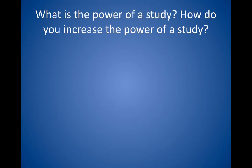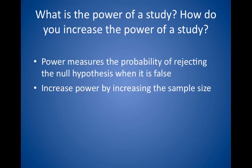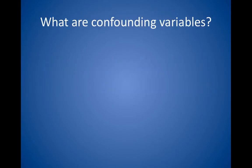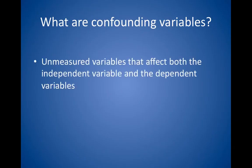What is the power of a study and how do you increase it? Power measures the probability of rejecting the null hypothesis when it is false, which is a good thing. The best way to increase power is to increase sample size. What are confounding variables? Confounding variables are unmeasured variables that affect both the independent (manipulated or experimental) variable and the dependent or outcome variable. For example, an experimenter measures the number of ashtrays owned with the incidence of lung cancer and finds that people who have lung cancer have more ashtrays, concluding that ashtrays cause lung cancer. Smoking tobacco is the confounding variable because it causes the increase in both ashtrays and lung cancer.